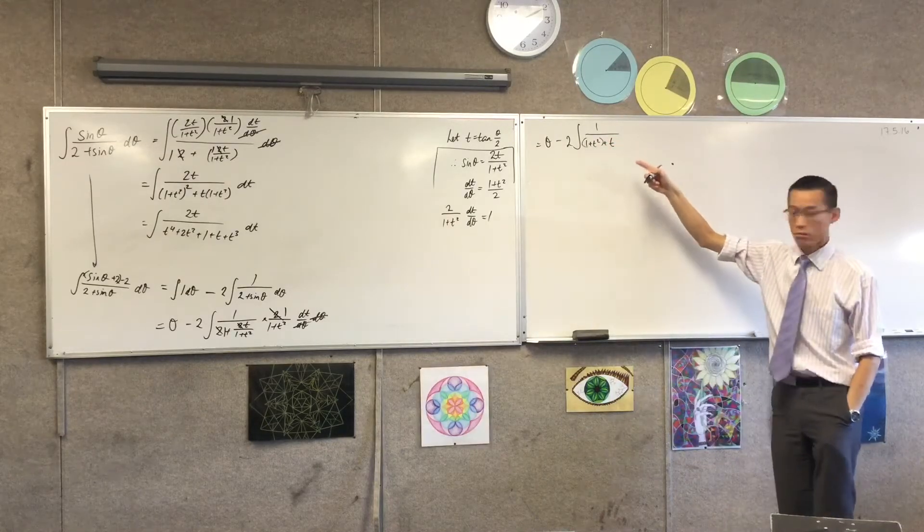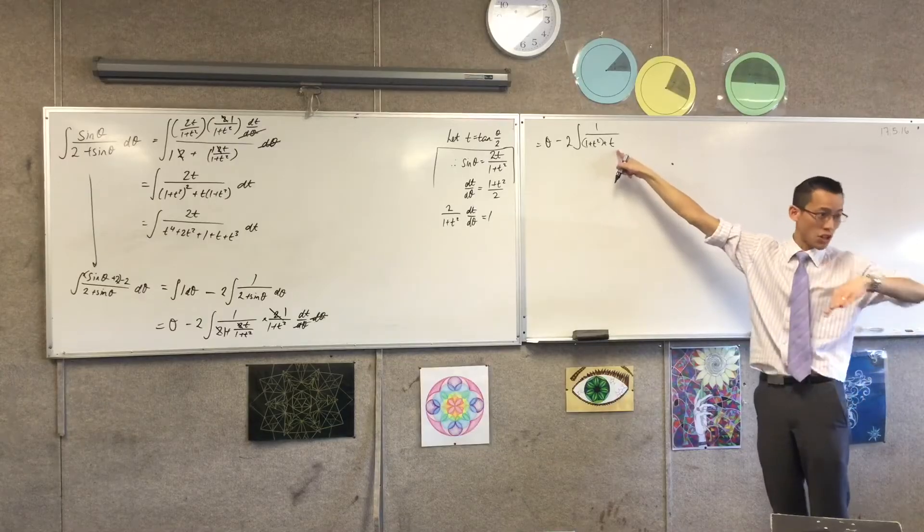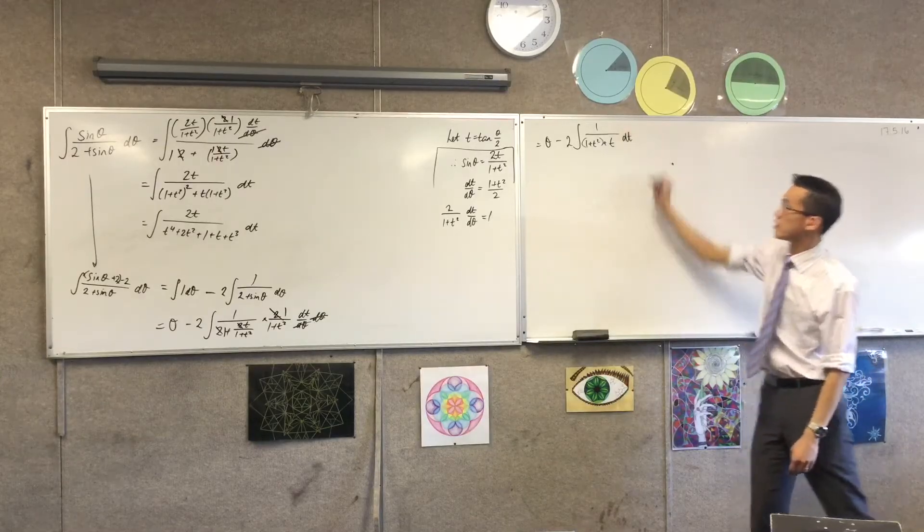1 on t squared plus t plus 1. 1 plus t squared. That's what I got from multiplying by the 1. And that's what I got. The denominators canceled with respect to t.